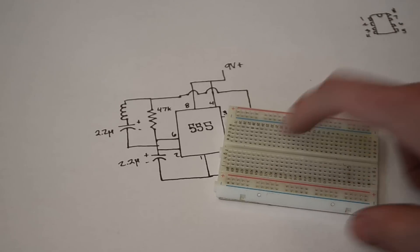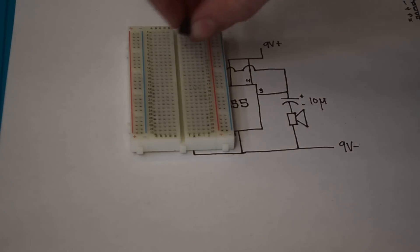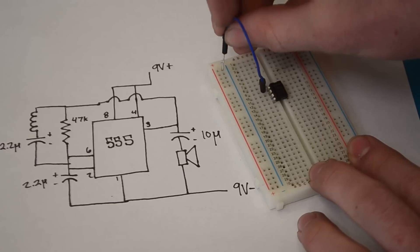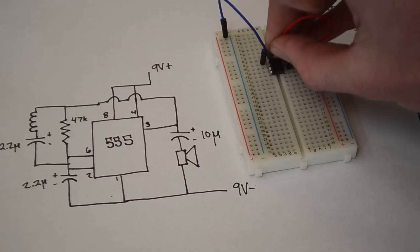And so now we can go ahead and build this circuit out onto the breadboard. I'm going to start by inserting our 555 timer chip in between these two rails. Now I'm going to connect pin 1 to this negative rail, and pin 6 is going to be connected to pin 2.